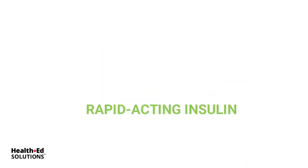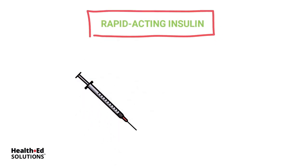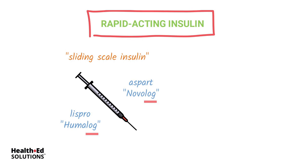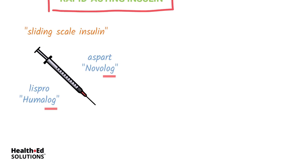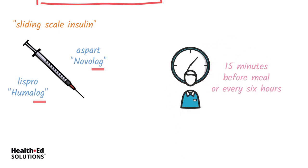We're going to start with the rapid acting insulins. The most common ones you'll see are Lispro and Aspart. The Aspart is Novolog — it ends in LOG — and we give it most commonly for sliding scale insulin. When you're checking your patient's blood sugar, it's usually ordered AC and HS or every six hours.